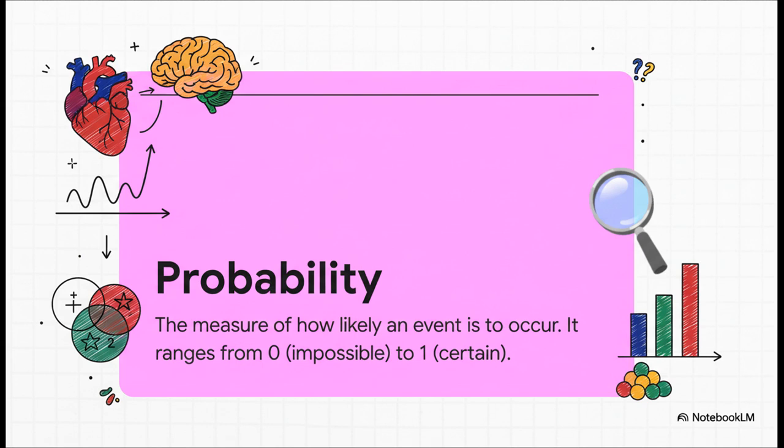If the meter is at zero, that thing is never, ever going to happen. Impossible. If it's at one, it's a guaranteed 100% sure thing. And pretty much everything else in our lives, from the weather to our health, falls somewhere in between on that zero to one scale.